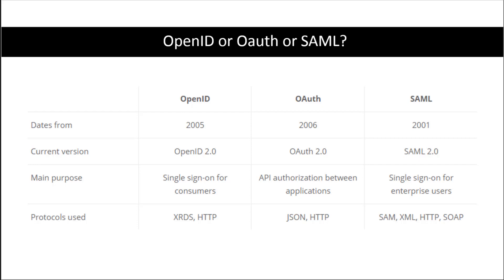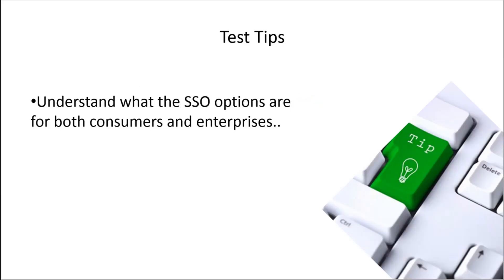These are risks that you need to look at and determine what makes sense. The main test tip here is to know the three options and to understand what's appropriate for your enterprise and what's appropriate for consumers. OpenID is easy to remember — that's going to be your Facebook login, your LinkedIn, your Twitter, whatever you want to use. And then if it's enterprises, we need to determine if it's going to be used for APIs or for single sign-on.